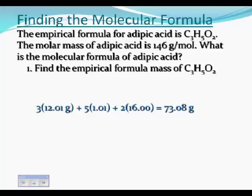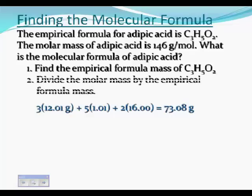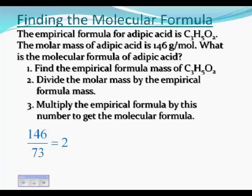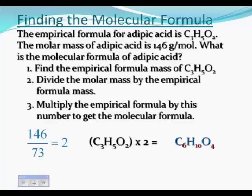Because since the empirical formula and the molecular formula are related by an integer, we're going to want to take the molar mass of the empirical formula mass and divide it by the molecular mass. We've got that backwards. Take the molecular mass and divide it by the empirical formula mass. We get a value of 2. So what that means is that you then multiply the empirical formula by that, and you get the molecular formula, which is C6H10O4, which when you go and do the calculation we'll discover is 146 grams per mole.